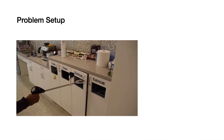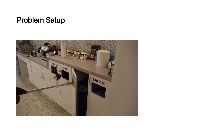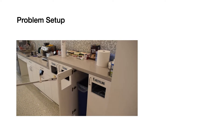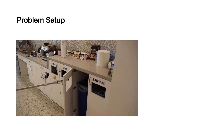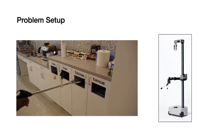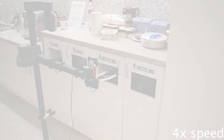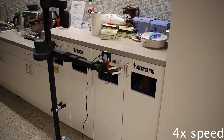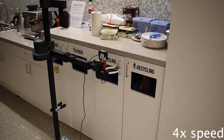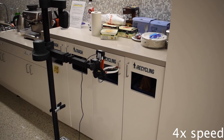Let's take the task of door opening. How do we take a few demonstrations of humans opening doors like these and use that to train a robot like this to do the same? Given a handful of demonstrations, our framework can open cabinet doors like this using only images from the robot's wrist-mounted camera.